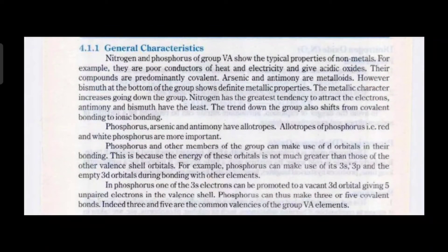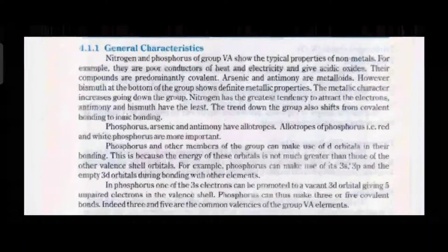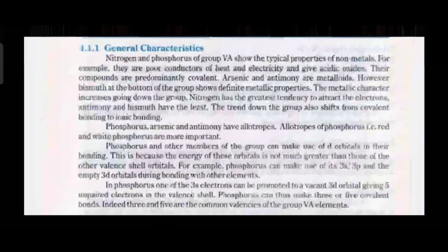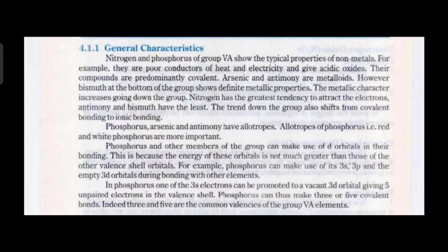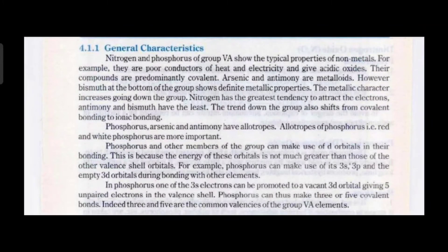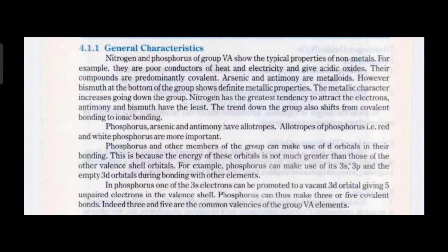Now let's talk about the general characteristics of group 5A elements. Except nitrogen, all elements of group 5A occur in the combined state, and nitrogen contributes approximately 80% of the Earth's atmosphere. All elements of group 5A show allotropy except bismuth. Nitrogen is usually present in the form of a gas, while all other group 5A elements are solids.